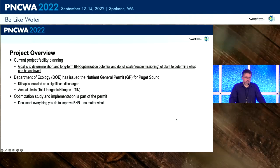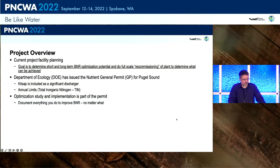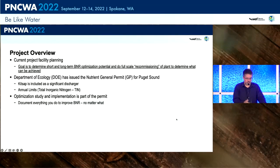This work cycles into the general permit requirements for Puget Sound. When we started this process, the general permit wasn't out yet — it came out halfway through. That puts limits on Kitsap as a significant discharger when it comes to total inorganic nitrogen, and it puts requirements on them when it comes to documenting optimization, nutrient removal, and evaluation. While we didn't have that directly in mind when we started, what we're doing will certainly feed into it. We're producing data and information that can be used to establish and evaluate for that general permit.